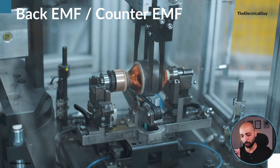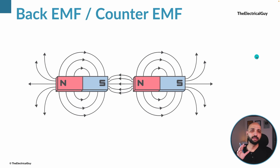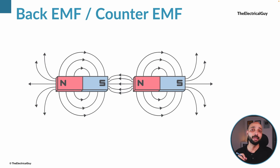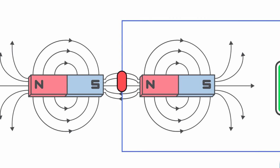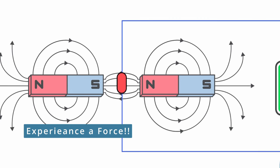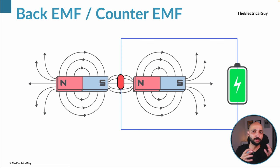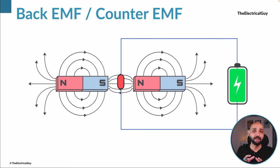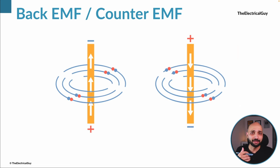Before we understand the concept of back EMF, there are two basic things we should know. The first thing is: let's say we have two permanent magnets generating a magnetic field. Now if inside this magnetic field we place a current-carrying conductor, it is going to experience a force — causing maybe a rotation, or a diversion from one direction to another. This is the basic principle on which the motor or generator works.